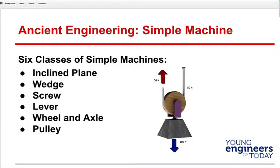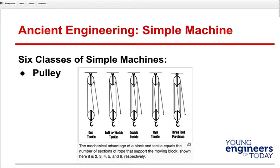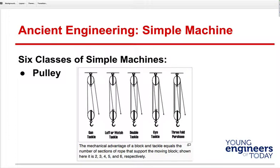This is an example of the six simple machines we talked about: inclined plane, wedge, screw, lever, wheel and axle, and pulley. We just talked about pulleys. So what is the ideal mechanical advantage of this one?